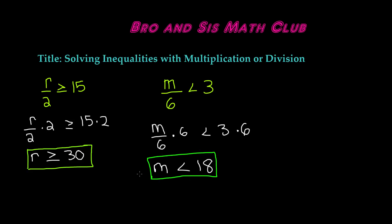So we get m is less than 18. The value of m can be any number less than 18, so it could be negative 1,000.